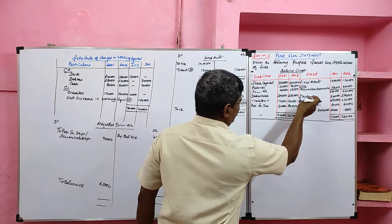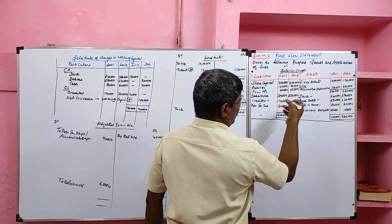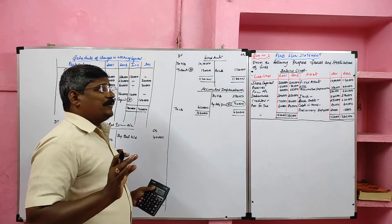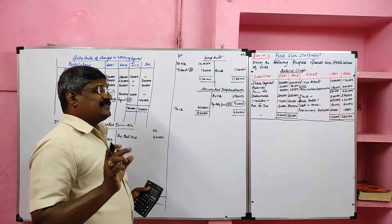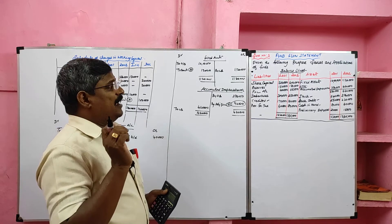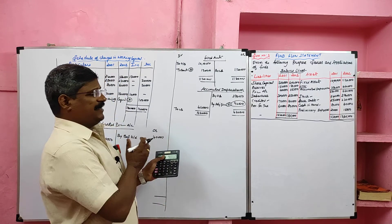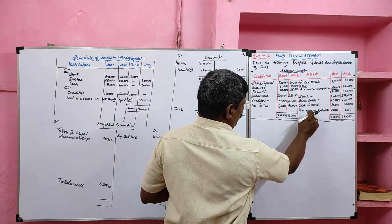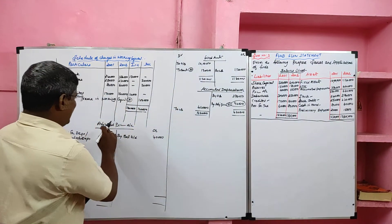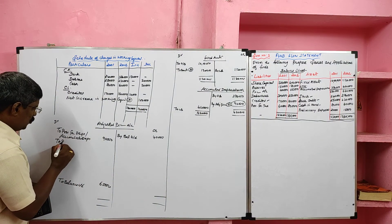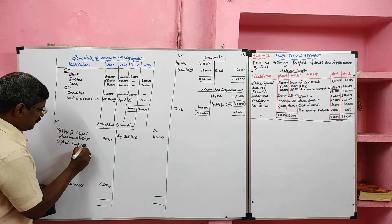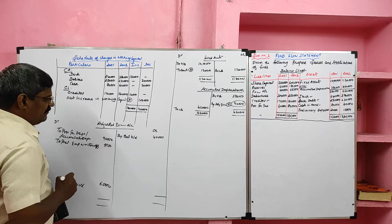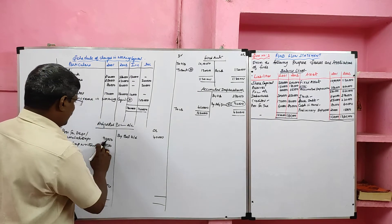Stock, book debts, and cash are already considered for working capital. For preliminary expenses, we need not prepare a ledger account - the difference should be recorded on the adjusted P&L account debit side as 'preliminary expenses written off.' Similarly for goodwill - no ledger account needed, just record the difference on the debit side. The difference is 5,000.